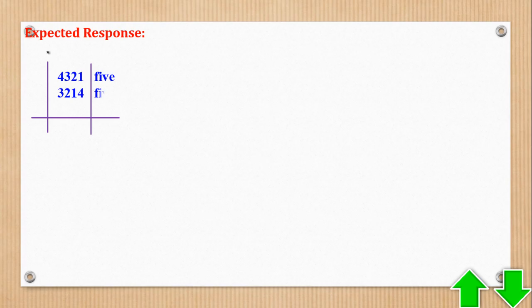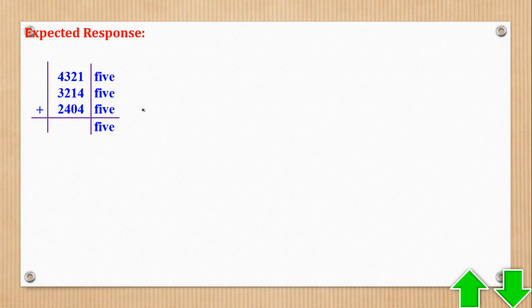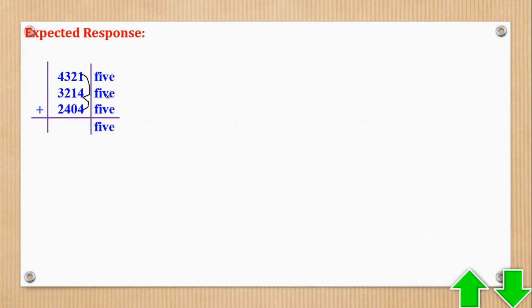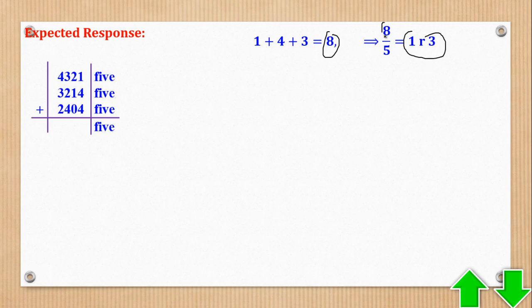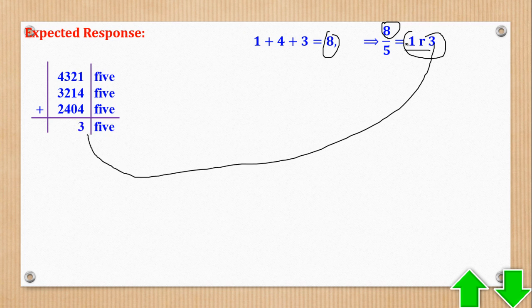Now we write down the base 5 numbers for all three terms and add them together, because we need the total books sold. Adding the units column: 1 plus 4 plus 4 gives 8. But in base 5 we cannot write 8. We say 8 equals 1 remainder 3 in base 5 — because 8 divided by 5 gives 1 remainder 3. So we write 3 here and carry 1 to the next place value.